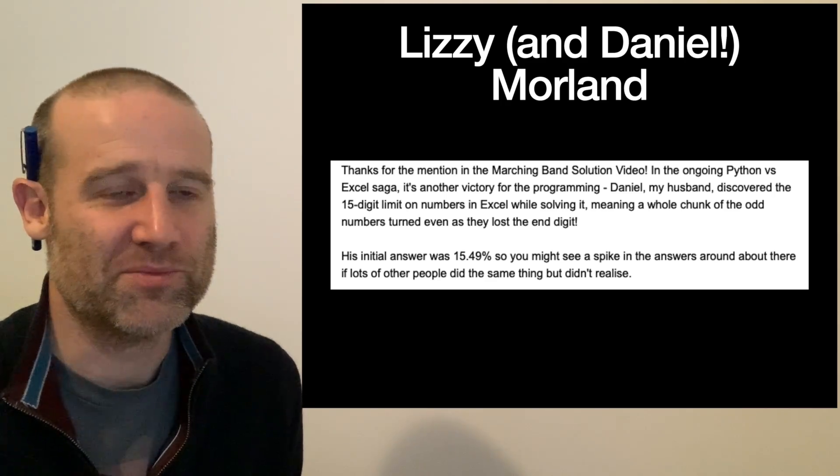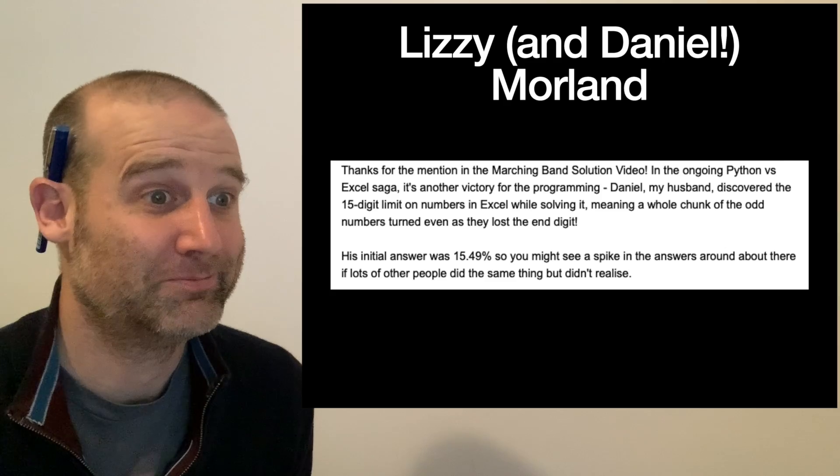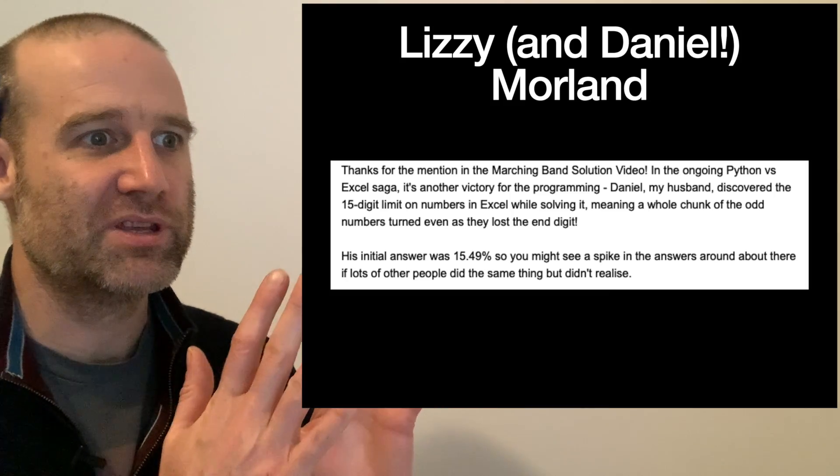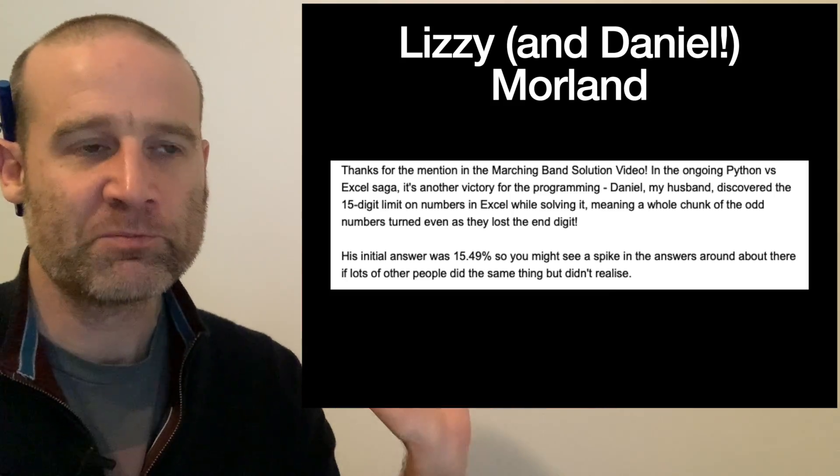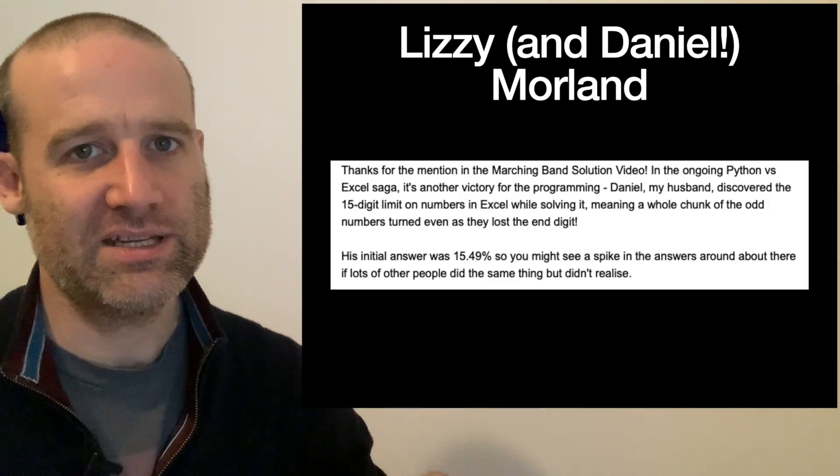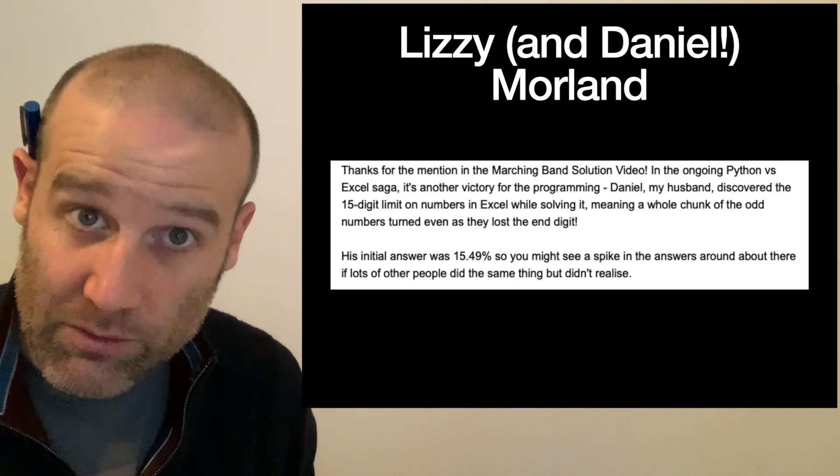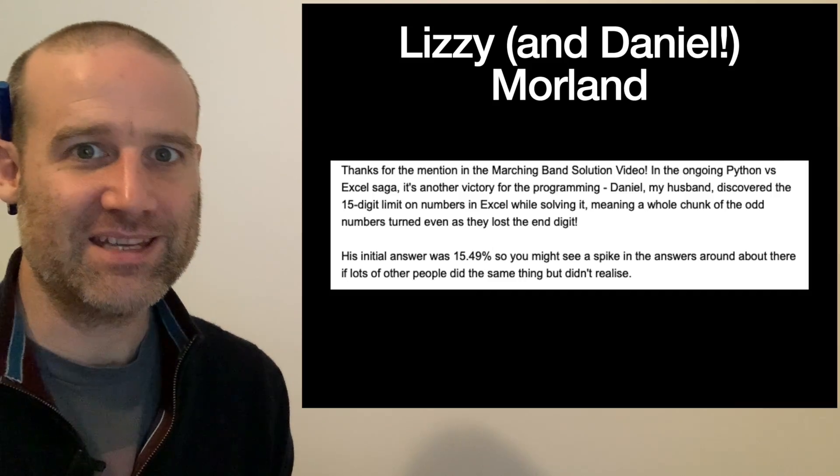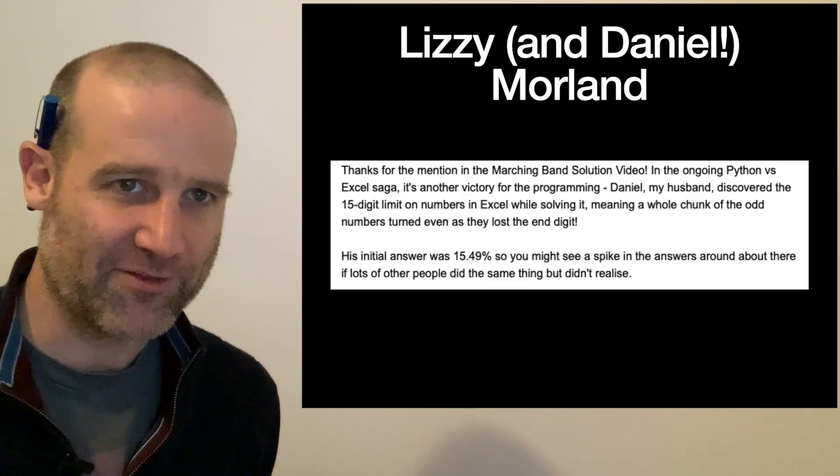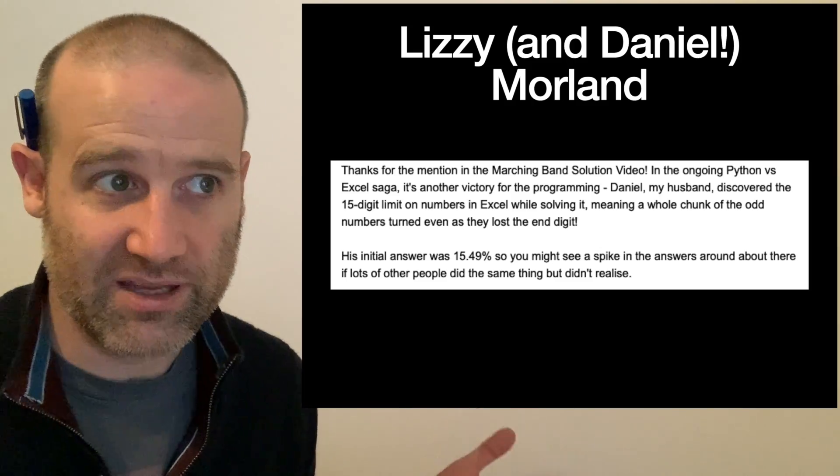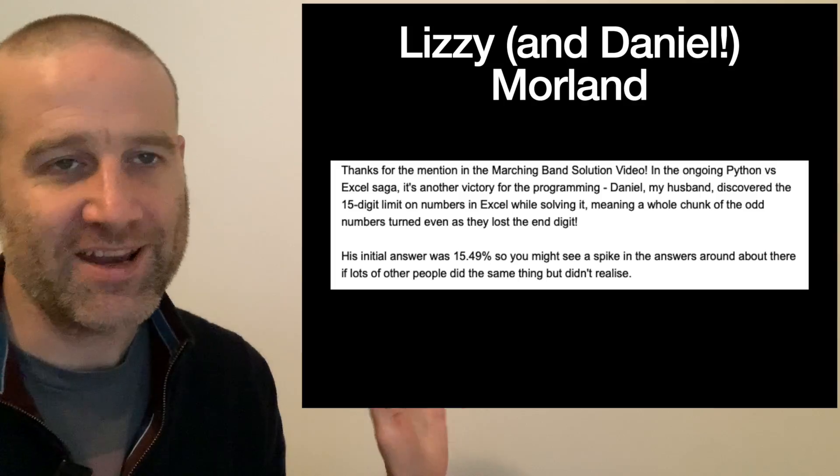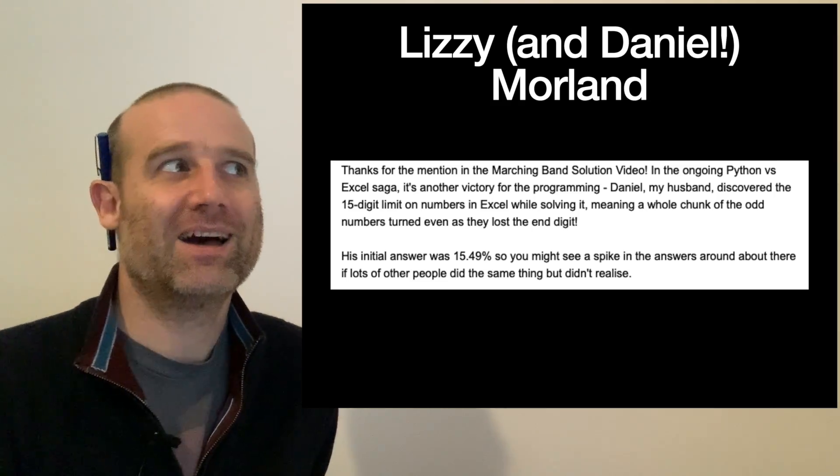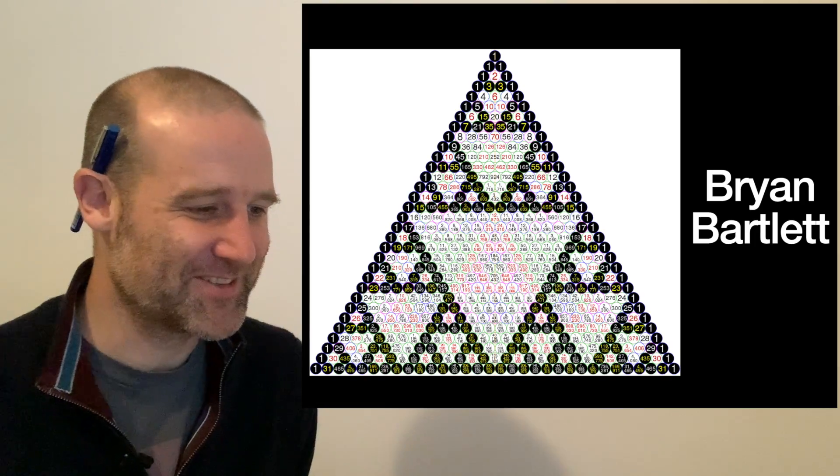Lizzie and Daniel, our couple who always do it coding versus spreadsheets. Daniel hit the 15 digit limit on numbers in Excel. Big fan of limits of Excel as you know. Excel stops giving you the trailing digits and you get a bunch of zeros, which means any number with more than 15 digits it assumes is even because it ends in a zero. But it's not actually even, Excel's just run out of precision. That's where all the 15.49 or whatever answers were coming from. People doing it in Excel or something else with the same limit missed counting a bunch of odd because it was no longer storing all the digits.